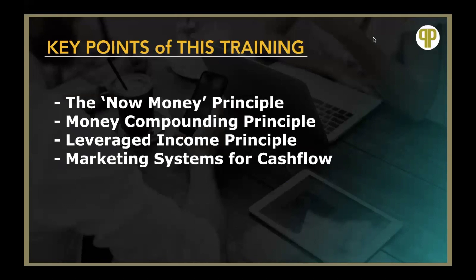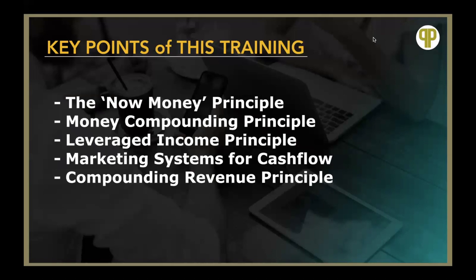Then there's marketing systems for cash flow — how do you create now money and have a system in place to grow leveraged income on top of that and have continual income coming in from the same marketing efforts? You have to have a really smart marketing system in place, so we can show you either how to create one yourself or plug into ones that already exist. Then there's the compounding revenue principle, which is different than the money compounding principle. It allows you to significantly grow and scale what you're earning in a really important way that everyone who's doing well online is applying but hardly anyone's talking about.